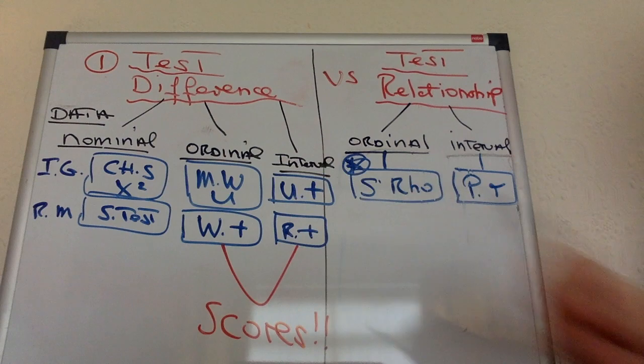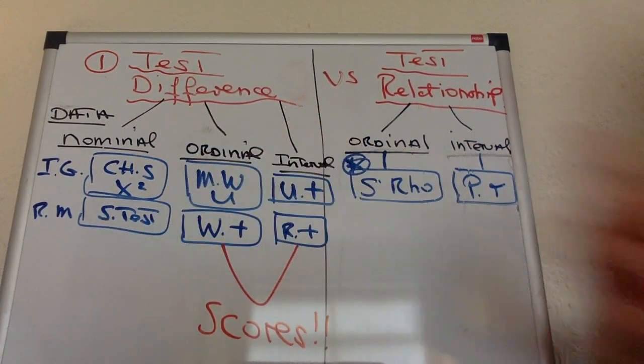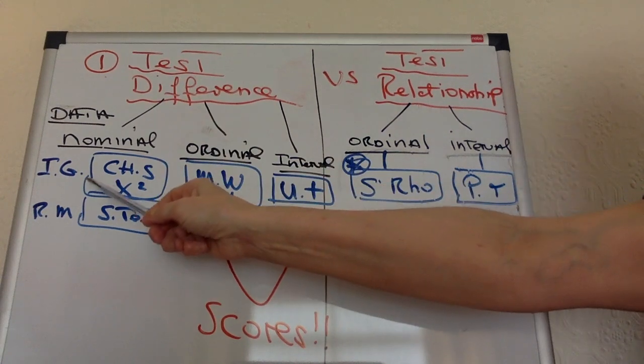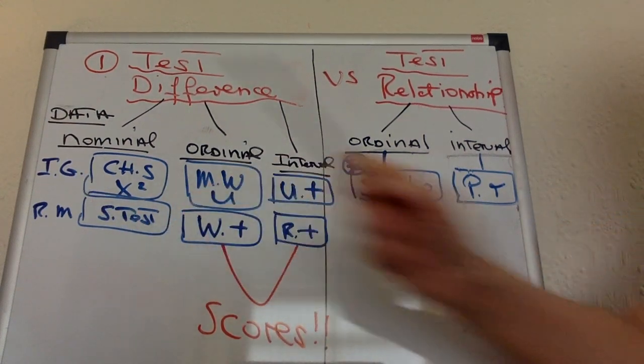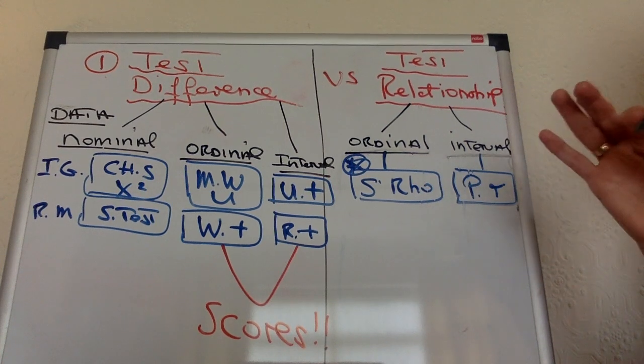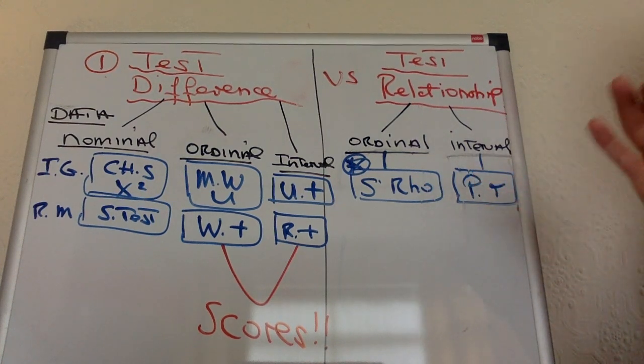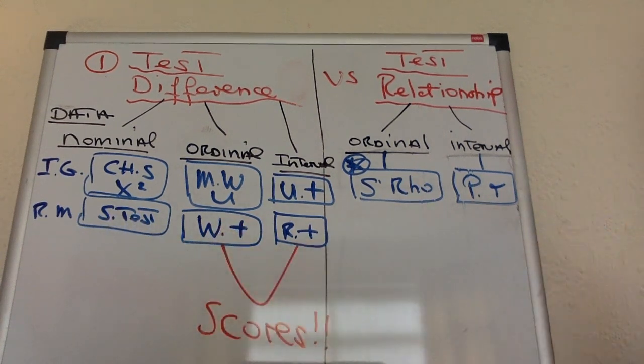So be very clear: if you've got nominal data, it's really easy. Have you got independent groups or repeated measures? If you've got independent groups - that means different people in each group - you've got a chi-squared test. If you've got repeated measures design - that means the same people are being measured, this is actually rare - then you've got a sign test.